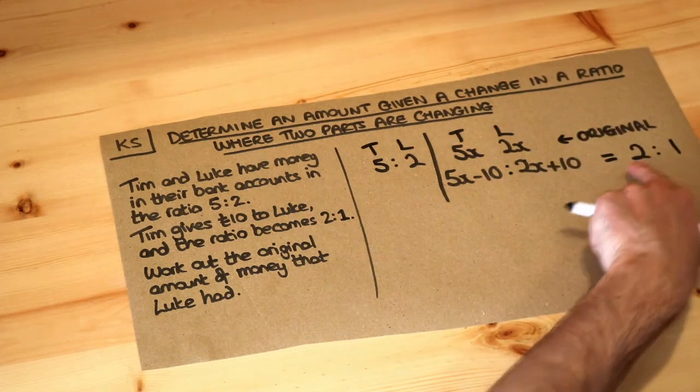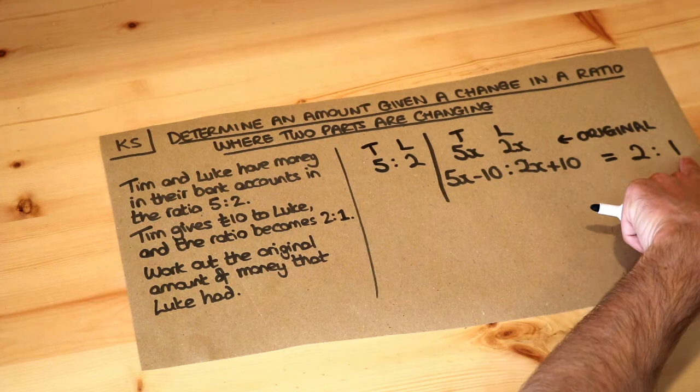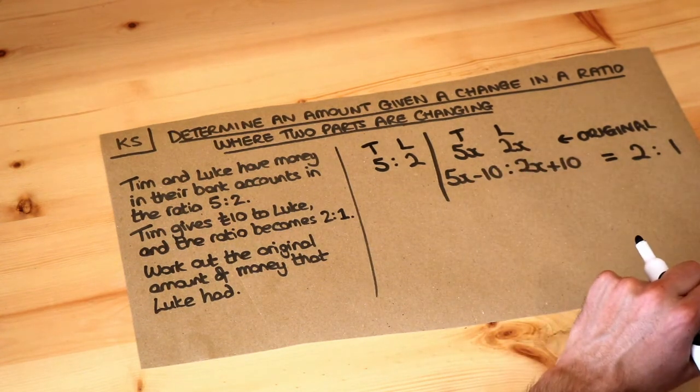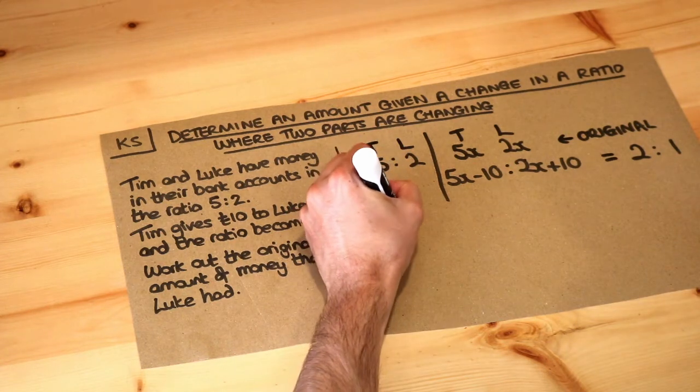Now what we could do is just spot that if it's 2 to 1 then Tim has twice as much as Luke. So Tim's amount is equal to twice as much as the 2x plus 10. But I'm going to use a more general strategy.